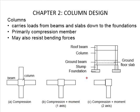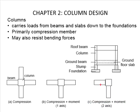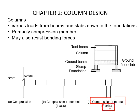Let us now look at the corner column. There is a beam on this side and another beam on the other side. This arrangement of loads will generate moment rotations in this direction as well as in this direction. This leads to a situation where the column undergoes compression and moment in two axes.